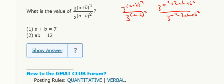So when I divide, I subtract the exponents, so that cancels, b squared cancels. And 3 to the 2ab minus negative 2ab is 3 to the 4ab. So really all I need to know is ab.